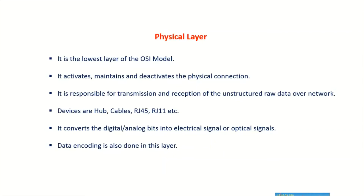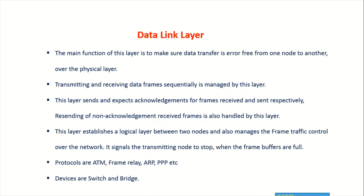In summary: the physical layer is the lowest layer of the OSI model — it activates, maintains, and deactivates physical connections and is responsible for transmission and reception of raw, unstructured data. Devices include hubs, cables, RJ45, and RJ11. The data link layer handles error-free data transformation and frame control, using protocols like ATM, Frame Relay, and PPP, with switches and bridges as its devices.